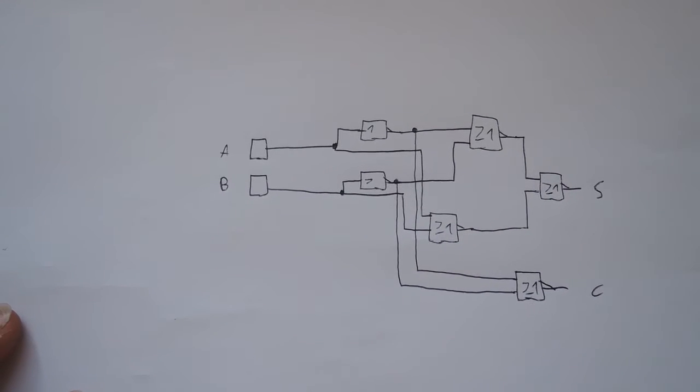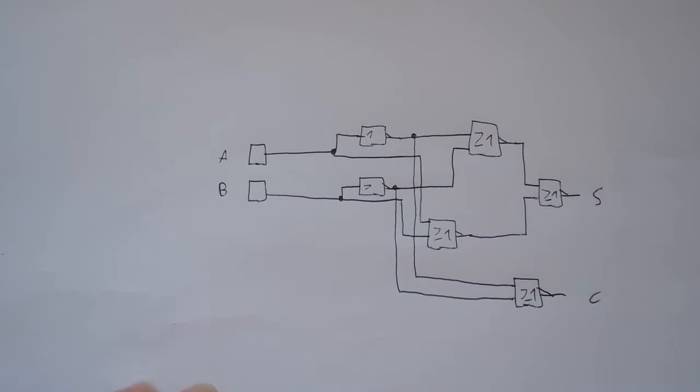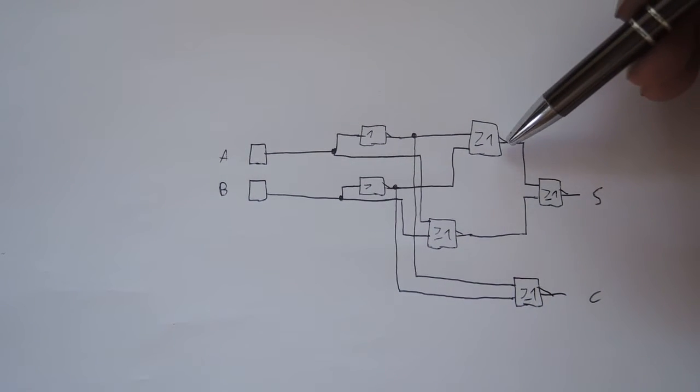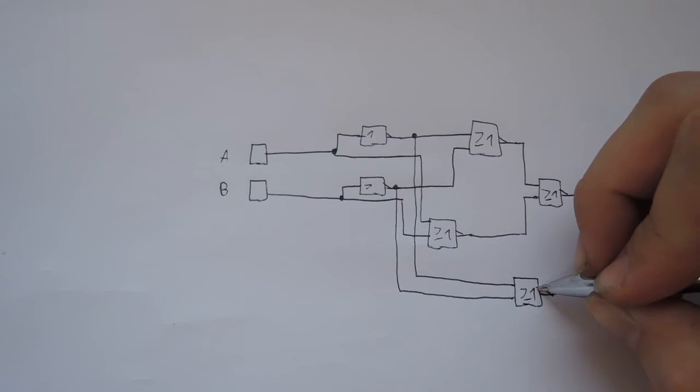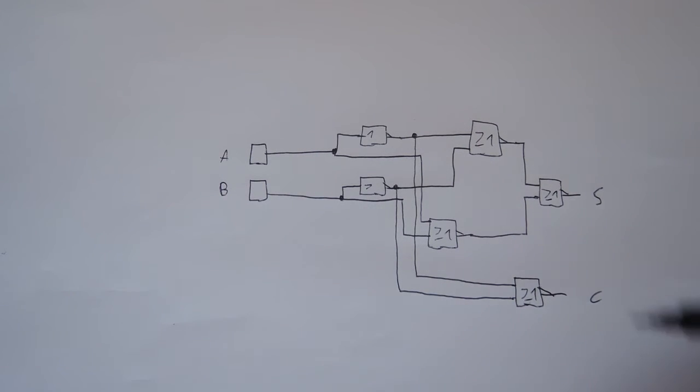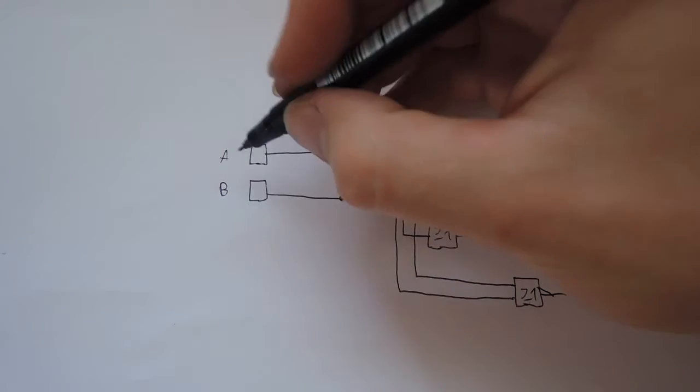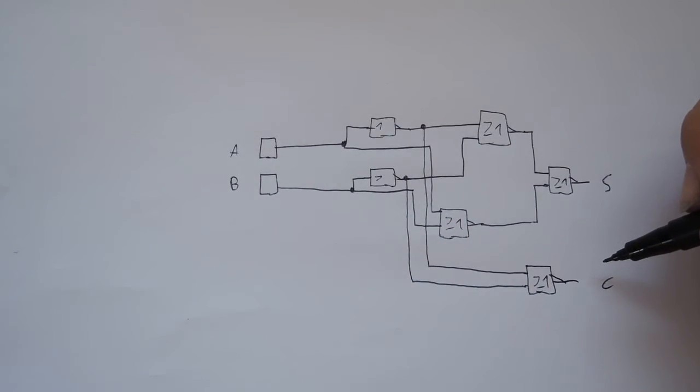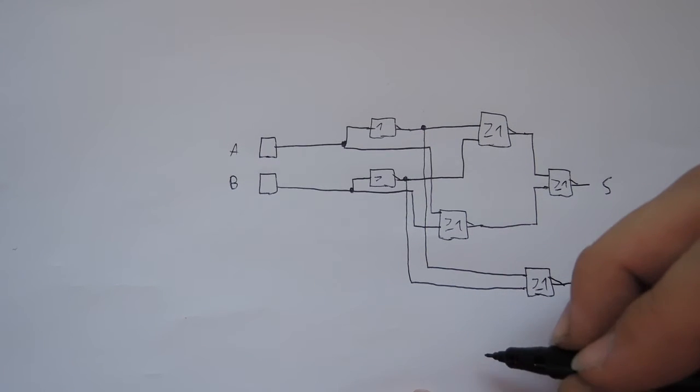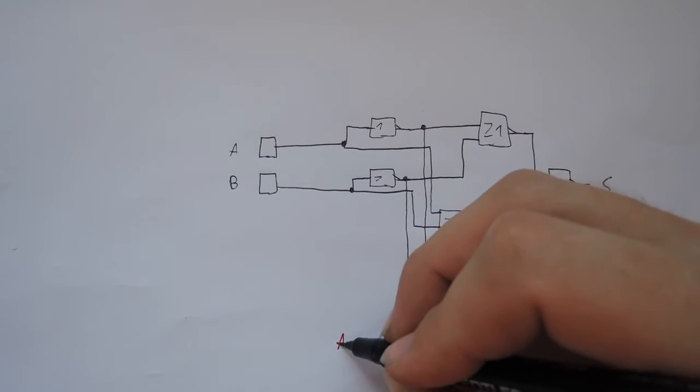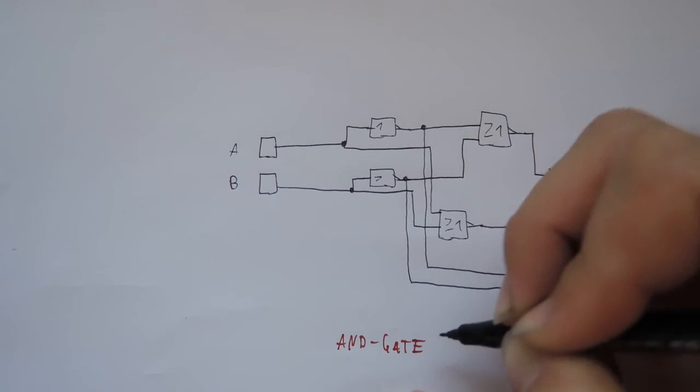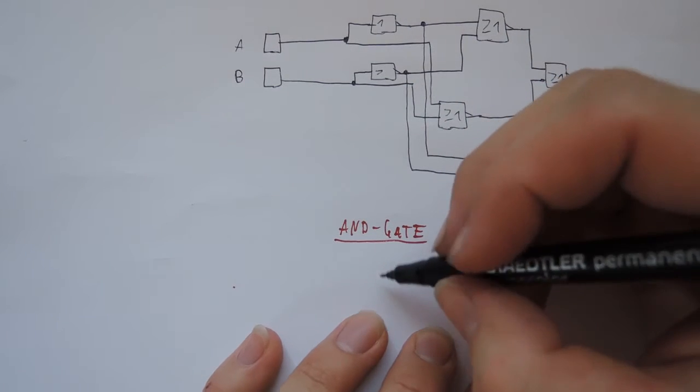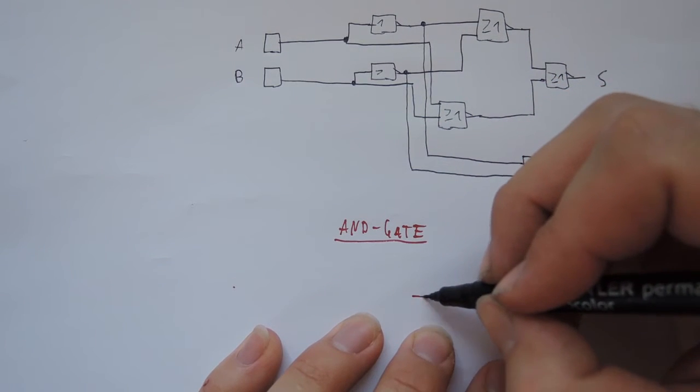And here is the half adder. You can see this type of half adder in my first video of the 8-bit computer. So you have two inverters, A and B input, and the sum and carry. That's an AND gate.